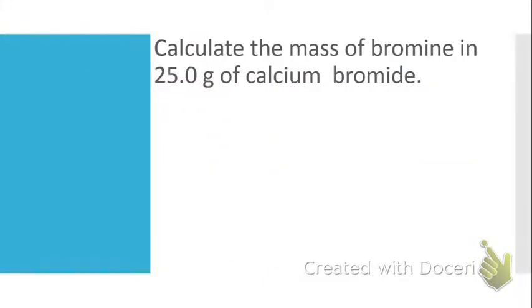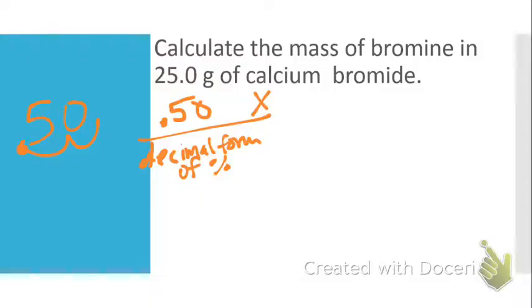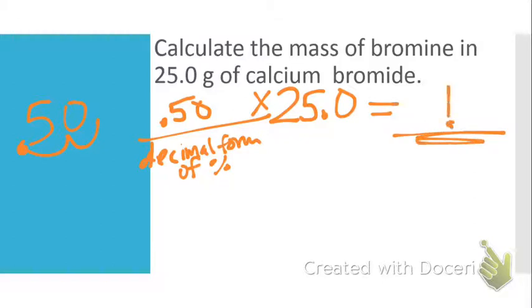Last problem on the page asks us to calculate the mass of bromine in 25 grams of calcium bromide. This doesn't even say anything about a percent. Technically, you don't have to solve it with the percent composition information, but you can use it to get there. Let's imagine that if I did know that this was 50% bromine in this calcium bromide, just say I did. Then I could take 0.50, which is the decimal form of our percent - 50%, you move the decimal twice from 50 to get 0.5. If you take that and multiply by 25, then that would get me my answer.